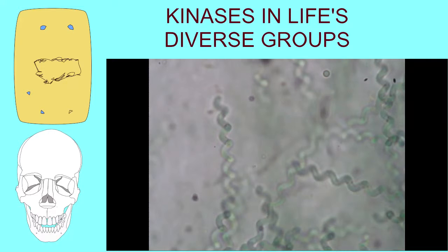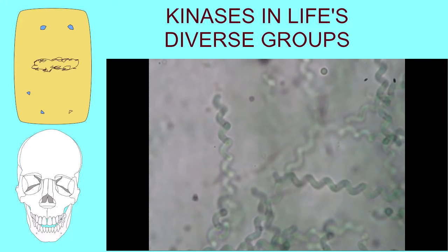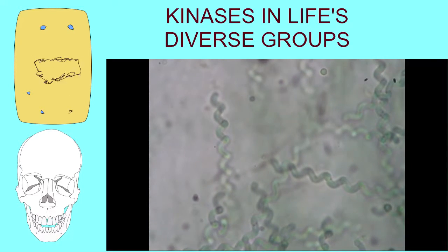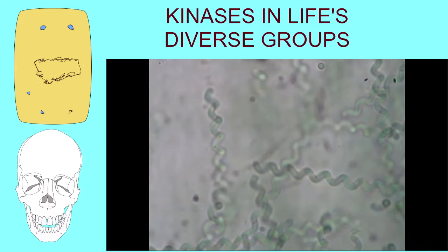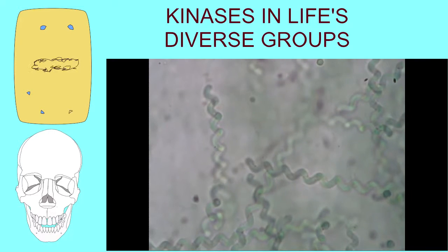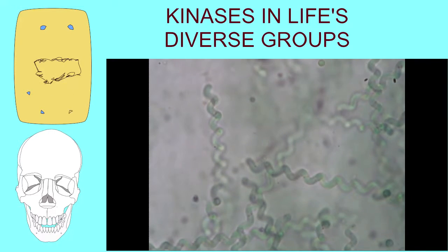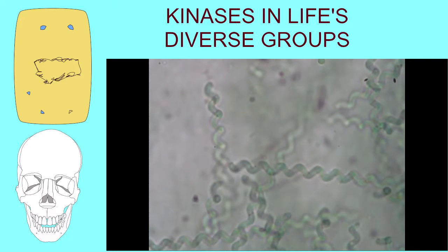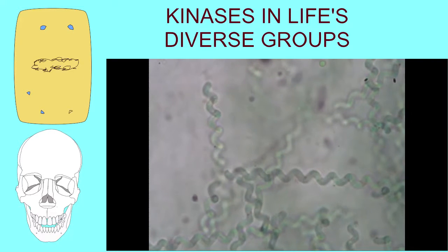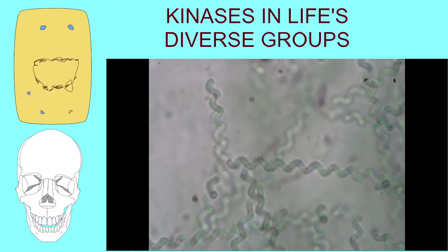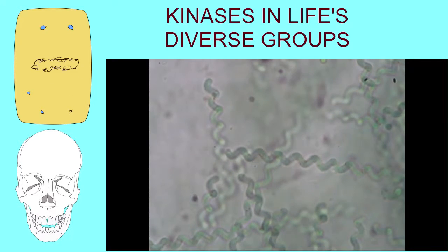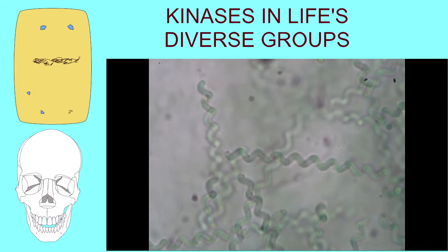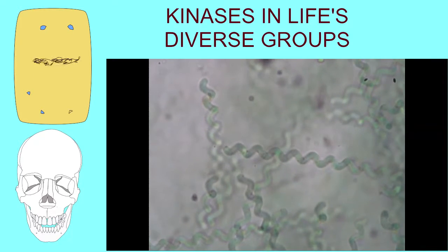Even though bacteria are unicellular, they can undergo death in culture in order to limit the spread of viruses. And a number of the apoptotic proteins known in higher organisms have homologues in bacteria, such as caspases, toll interleukin receptors, and so many other things.